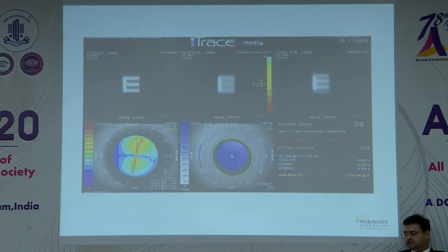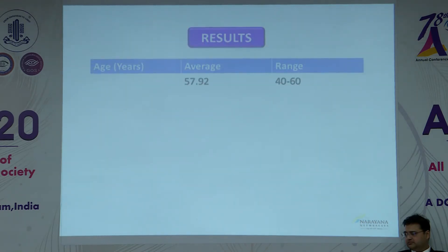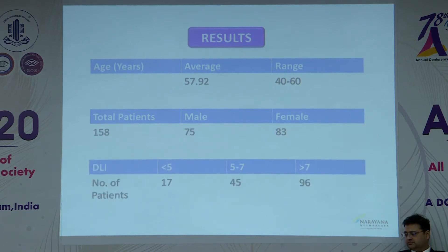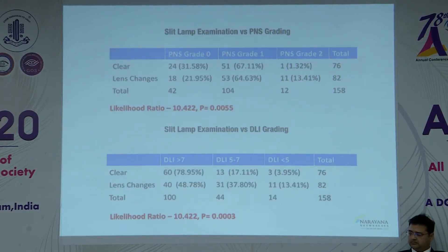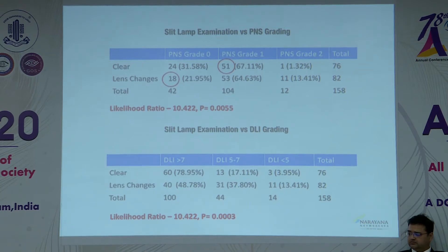The results: the average age was 57.92 years, 75 males and 83 females. DLI of less than 5 was present in 17 patients, 5 to 7 in 45, and more than 7 in 96 patients. Regarding slit lamp versus PNS grading: out of 76 patients found clear on slit lamp, Pentacam graded 51 as grade 1. Out of 82 with lens changes on slit lamp, Pentacam graded 18 as grade 0. On the DLI via eye trace, out of the 76 clear-on-slit-lamp patients, 15 were given 5 to 7, and the maximum were given more than 7, which is more accurate. Out of the 82 with lens changes, 40 were given more than 7.